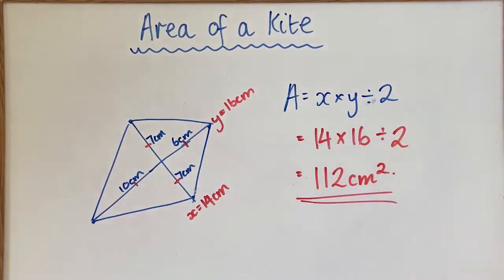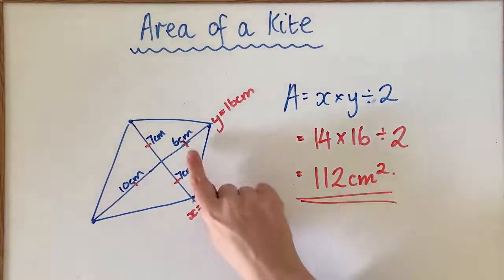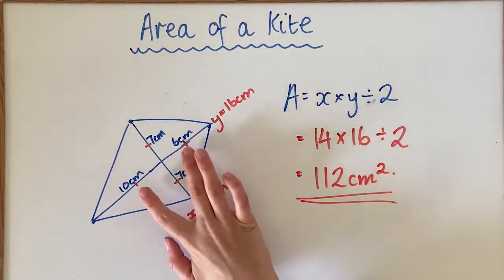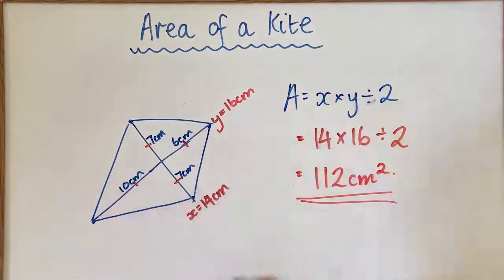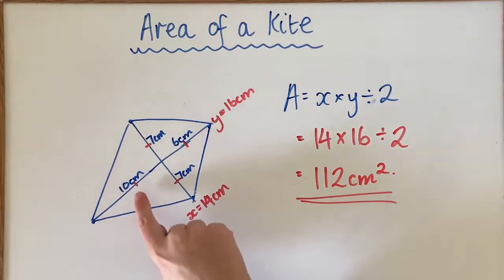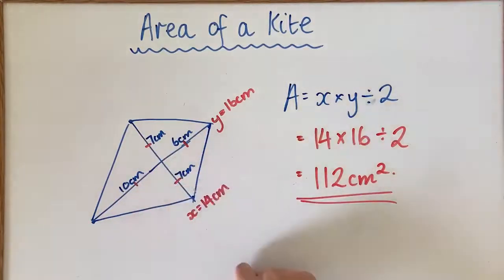So when you're trying to find the area of a kite, you just need to make sure what the measurements are actually labeling. If they're measuring the whole dimension, you can put them straight into the formula, whereas if they're splitting the shape up into smaller parts, you'll have to do a little bit of an addition first, then put those values into your formula.